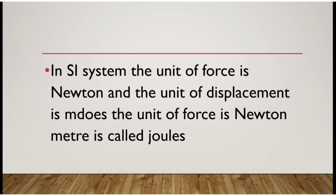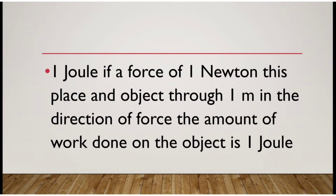On page number 20 of your textbook, 1 joule = 1 newton × 1 meter, represented as 1 J = 1 N × 1 m. The definition of 1 joule is: if a force of 1 newton is applied and the displacement of the object is 1 meter in the direction of the force, the amount of work done will be 1 joule.